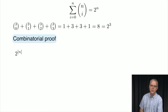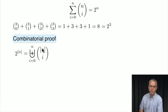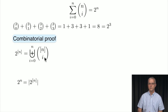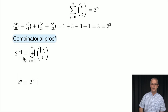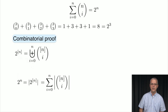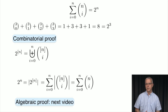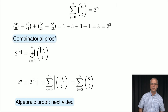The set of all n-bit strings can be written as a disjoint union: for each i from 0 to n, the collection of n-bit strings with exactly i 1s. Since these collections are disjoint, by the summation rule the total count is the sum from i=0 to n of n choose i. But the number of n-bit strings is 2 to the n, so the summation equals 2 to the n.